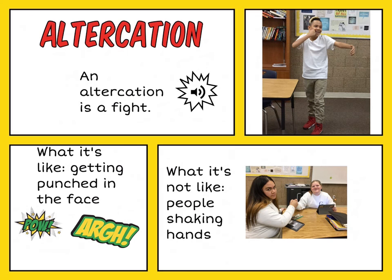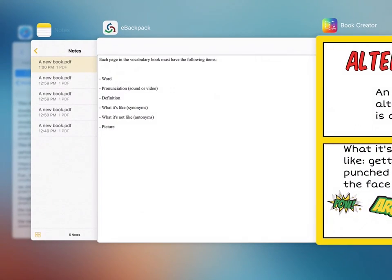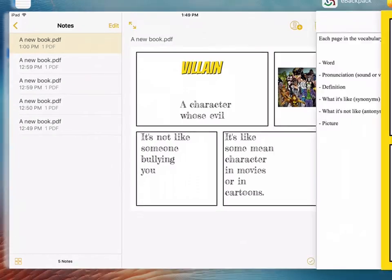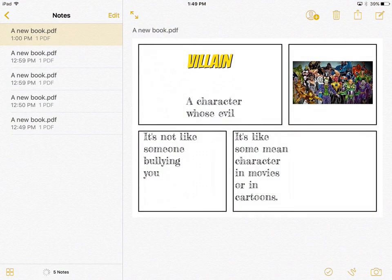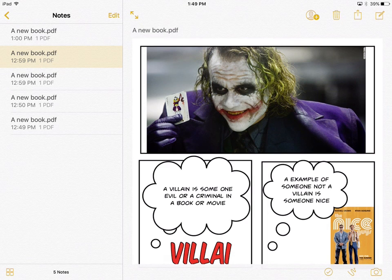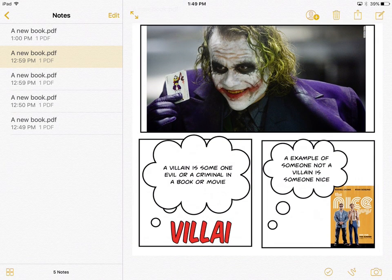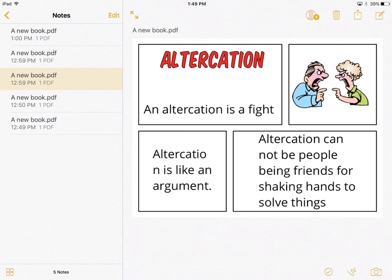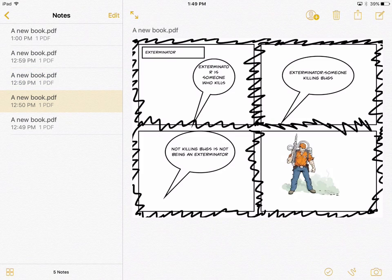I could show student examples too. Here are a couple of student examples — they've not quite figured out the sound, the media portion of it. We're working on that this week. But here are a couple that kids have done. Villain was one of the words they chose. That was one they used when we did it all together. Exterminator.